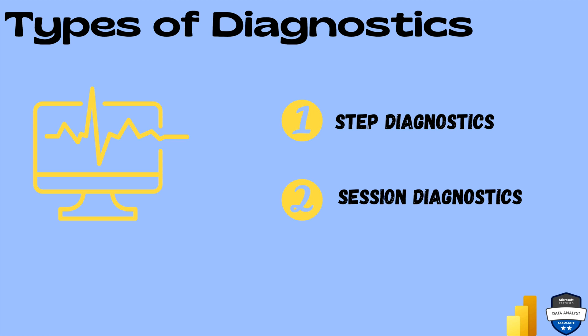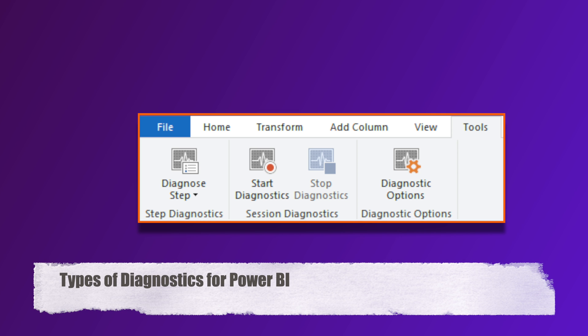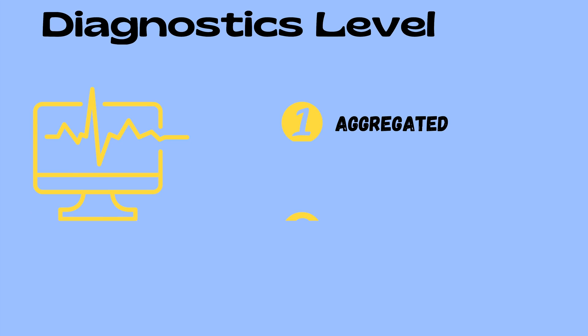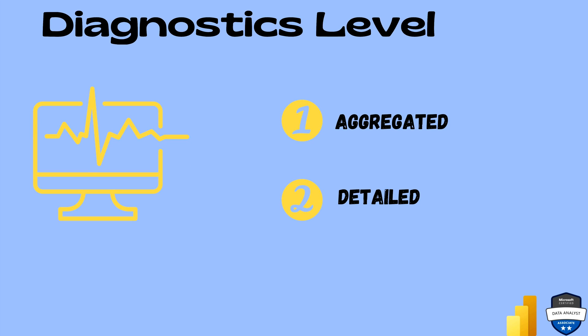Now the question is: what are the different types of diagnostics? There are basically two types — one is Step Diagnostics, another is Session Diagnostics. As you can see in this window, there is Step Diagnostics, Session Diagnostics, and Diagnostic Options. I don't count Diagnostic Options as a type of diagnostics because it's basically the options settings where you can tick what different options you want. Majorly, there are only two kinds: Step Diagnostics and Session Diagnostics.